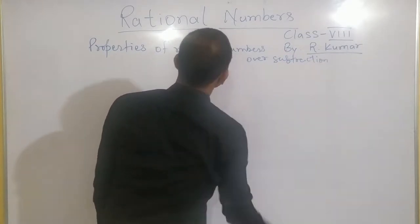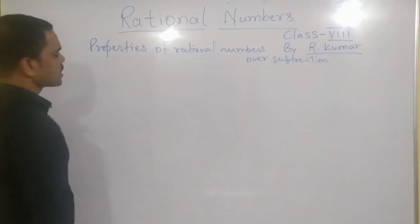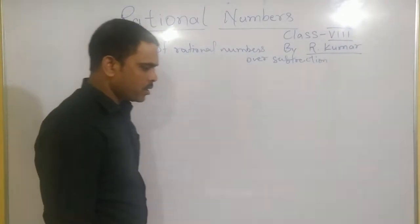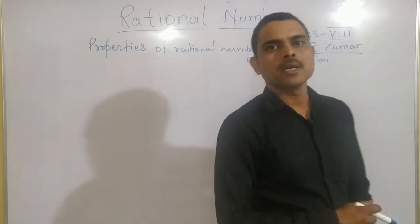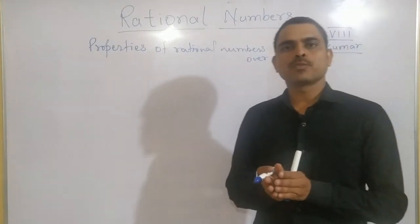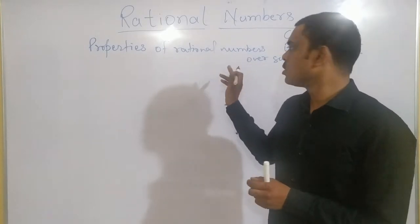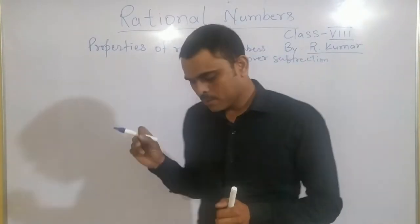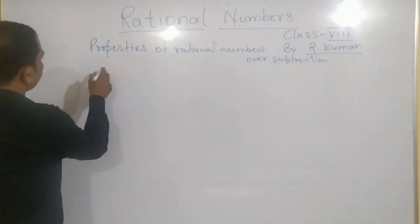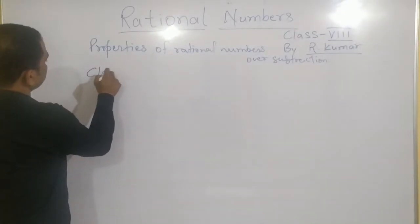Here we discuss about 4 different properties, and I will check whether that property satisfies for subtraction also or not. So now first of all I will talk about closure property.